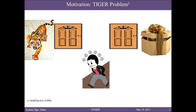I would like to introduce this concept with a famous problem in this area: the tiger problem. Assume that you are in a corridor facing two doors, left and right. Behind one door lies a hungry tiger and behind the other door lies untold riches, but you don't know the position of either. You can either open the left door or right door, and there is another option: listening. You can hear growls from the left and right.